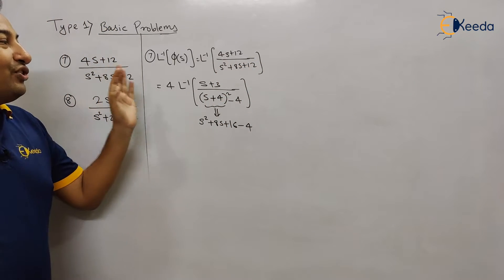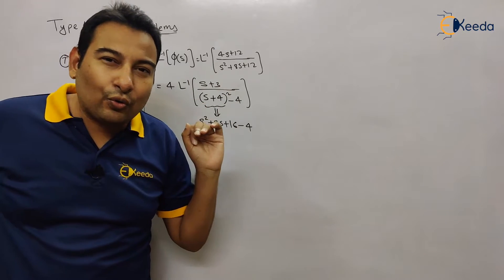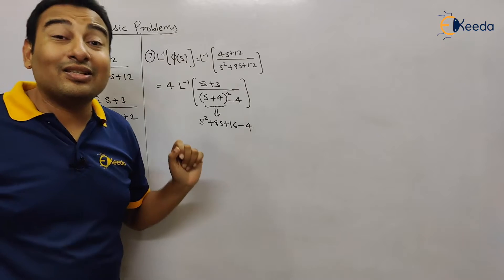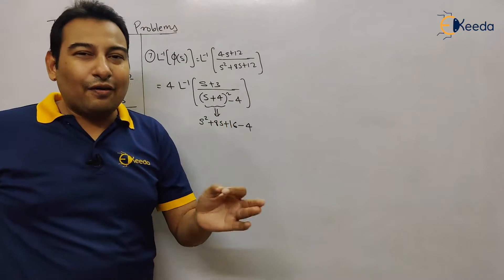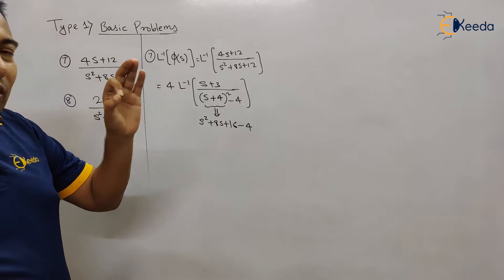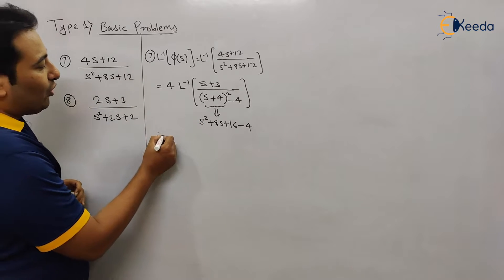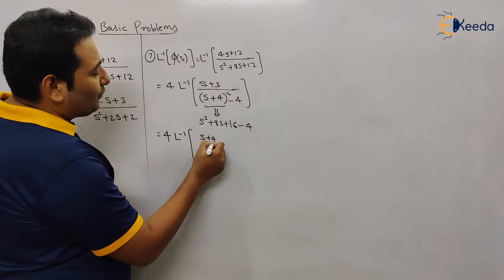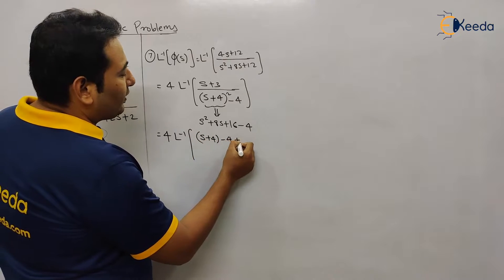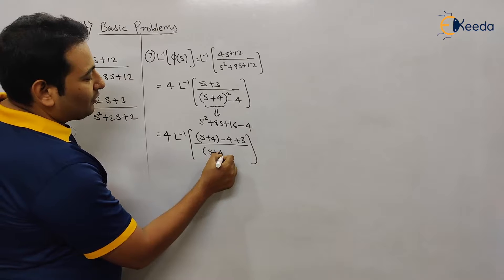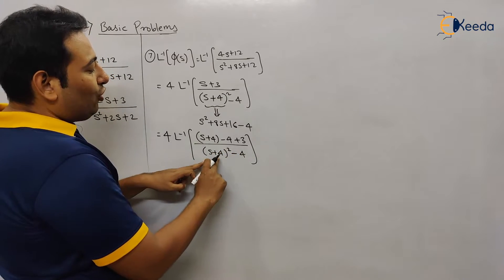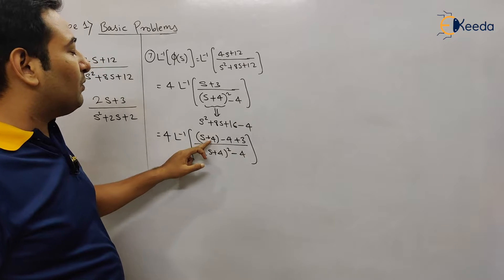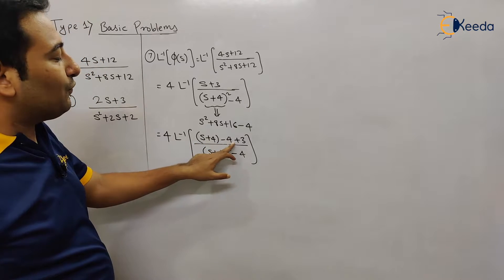Now, do you find shifting in this particular problem? No — why? Because here it is plus four in the denominator and plus three in the numerator; they are different, so it cannot be shifting. Therefore you need to convert the numerator according to the denominator. This will be four times inverse Laplace of s plus four minus four plus three, upon s plus four the whole square minus four. In the denominator we have s plus four, therefore in the numerator we must also have s plus four, so we write plus four minus four plus three.